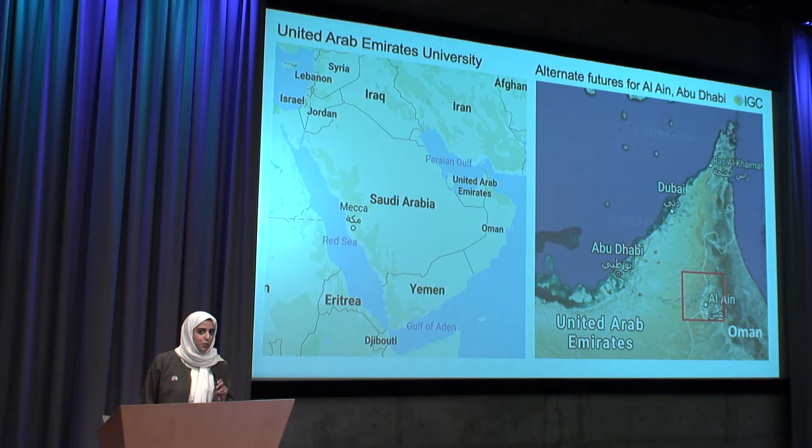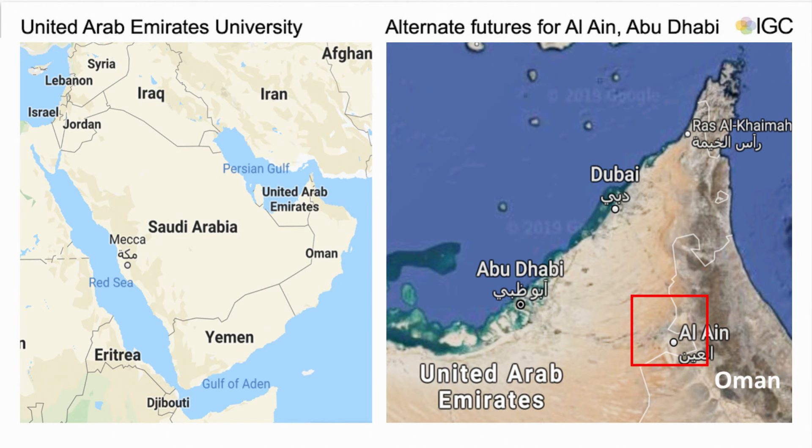Assalamu alaikum. Good morning everyone. My name is Jawahir Anwar. I am from UAE University in the United Arab Emirates. Thank you for having us here — we are very happy to join you in this conference. Our project is about alternate futures for Al Ain City. UAE is located in the Arabian Peninsula, and Al Ain City is located in the eastern region of the Emirate of Abu Dhabi.